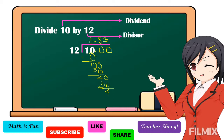Then we add zero again and bring down zero: 40 divided by 12 is equal to 3. Three times 12 is equal to 36, and 40 minus 36 is equal to 4. Our remainder is always 4, which means we have a non-terminating decimal of 0.833...